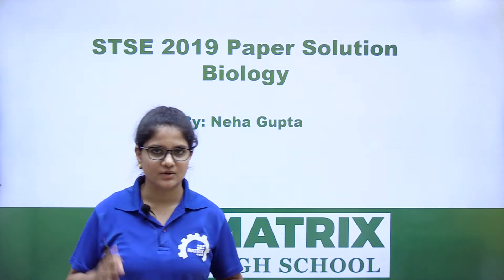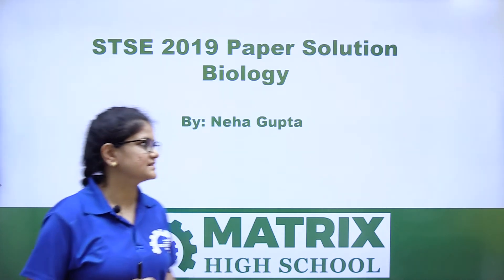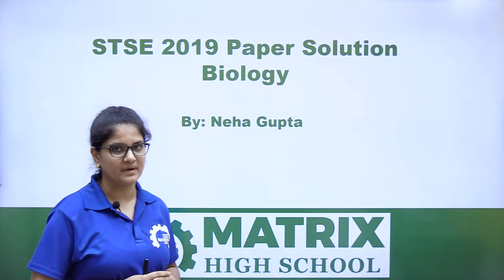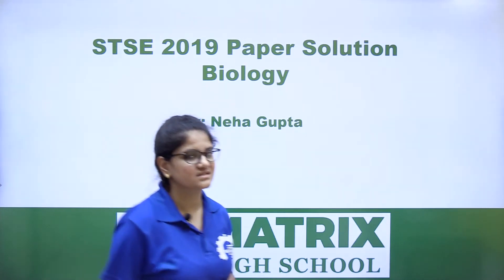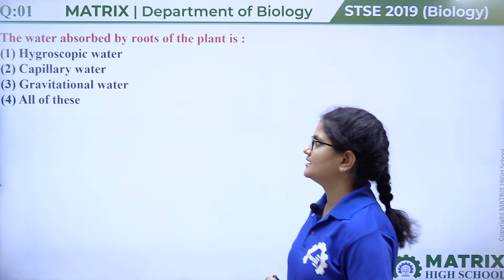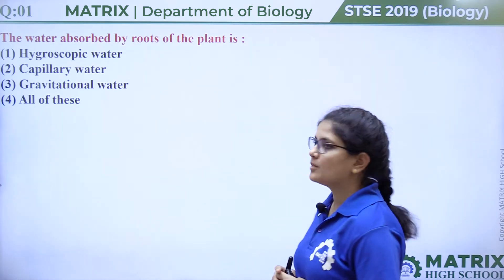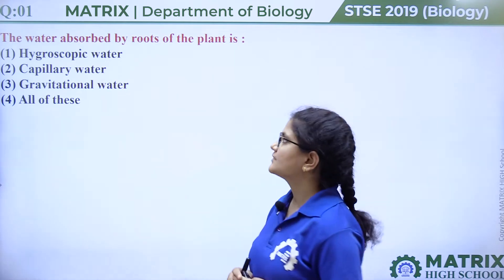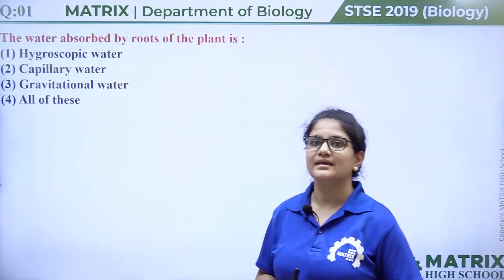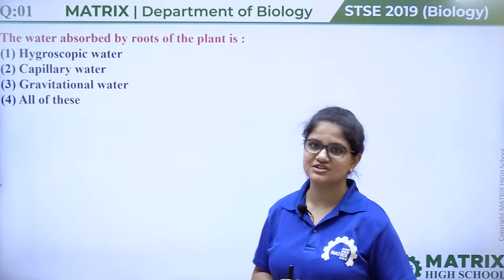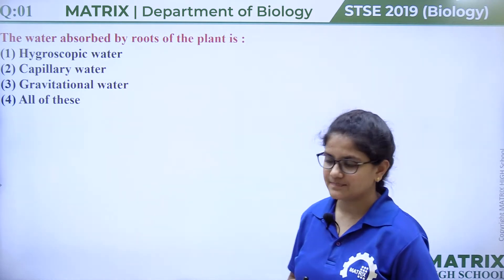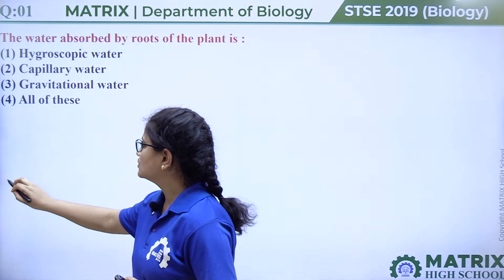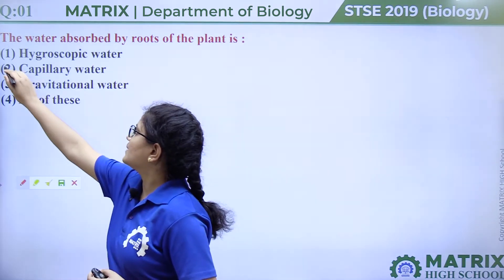Hello students, today I will be discussing the STSC 2019 paper solution of biology. Let's start with the first question: the water absorbed by the roots of a plant is hygroscopic water, capillary water, gravitational water, or all of these. The answer is option two, capillary water.